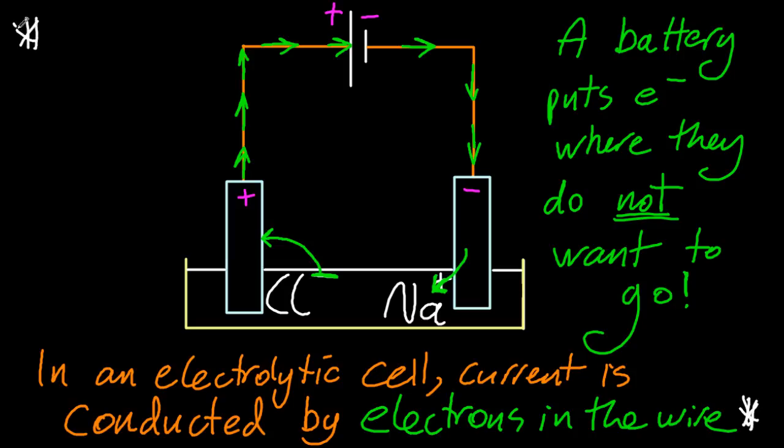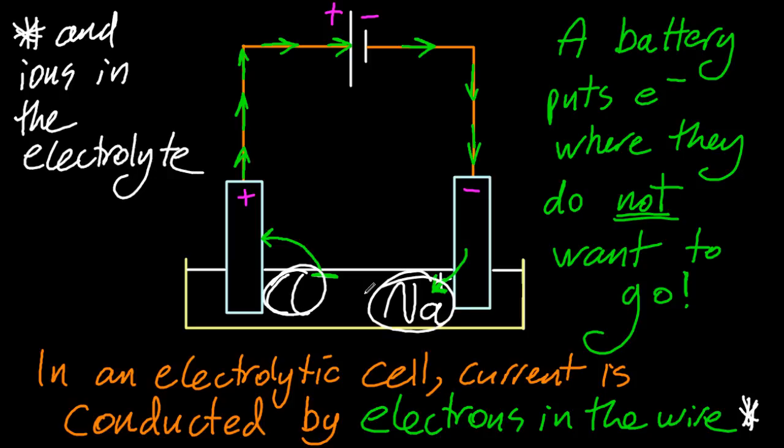The electrons are conducting the current in the external circuit, and within the electrolysis apparatus itself, it's actually ions that are completing the circuit and allowing current to flow. So the answer is electrons and ions.